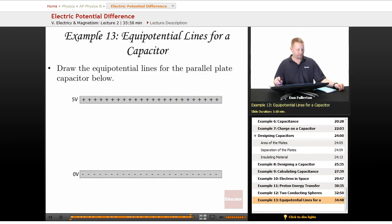Equipotential lines for a capacitor. Draw the equipotential lines for the parallel plate capacitor below. Well, the first thing I'm going to do is it's probably easier to draw the electric field first, going from positive to negative. So I'll put in some electric field lines first, in green here.